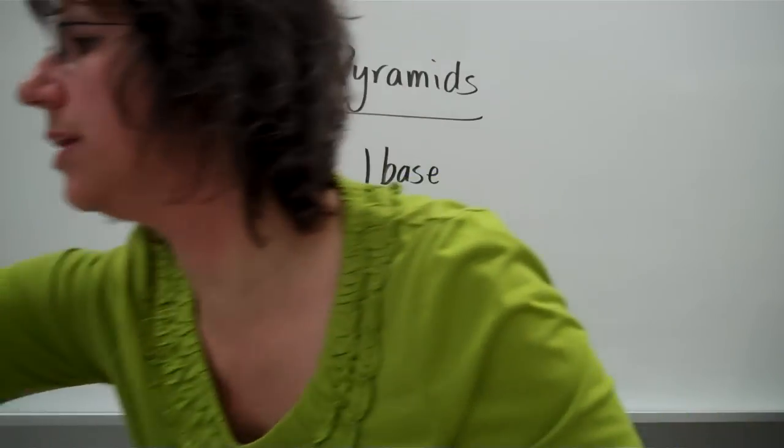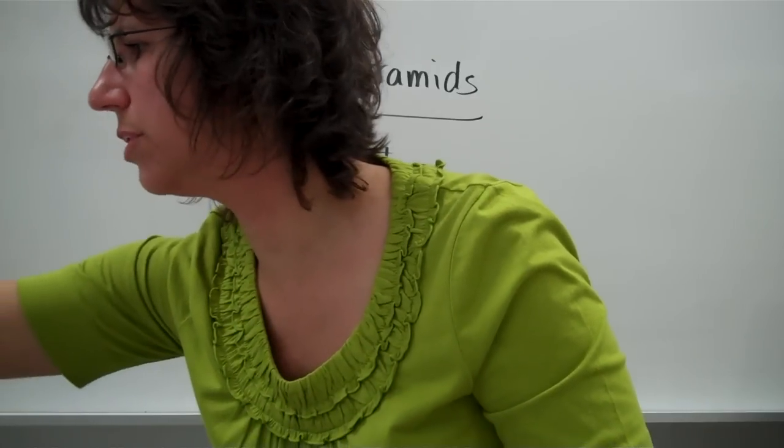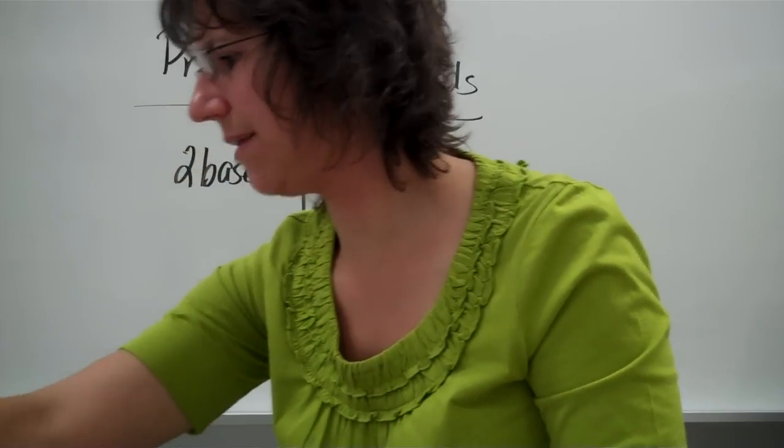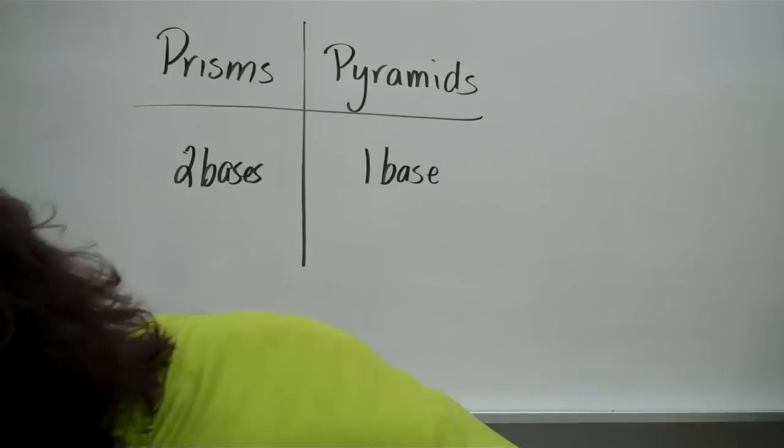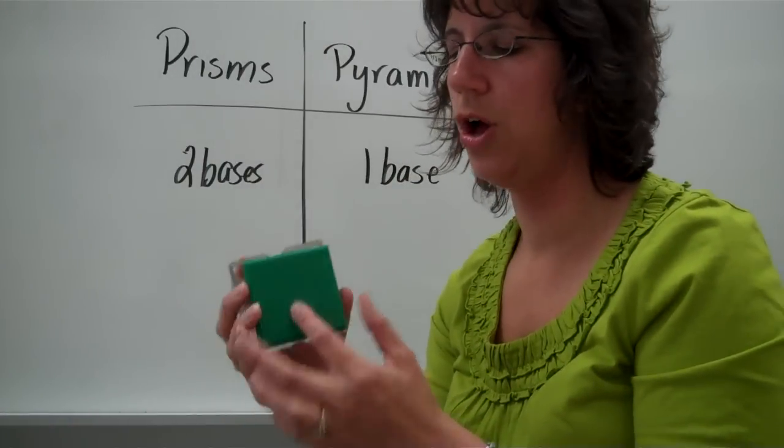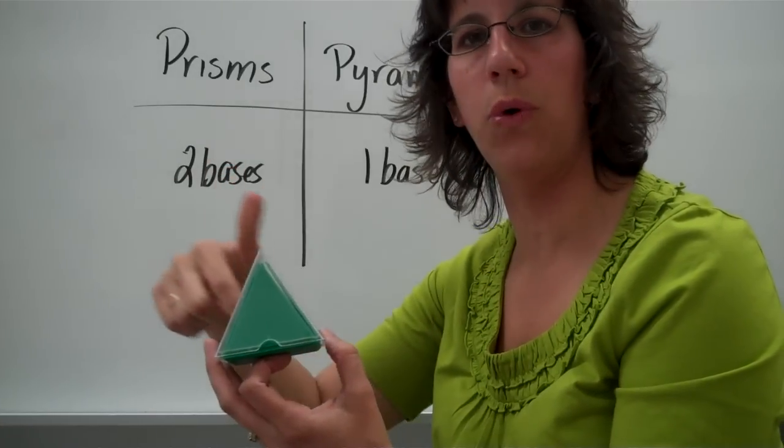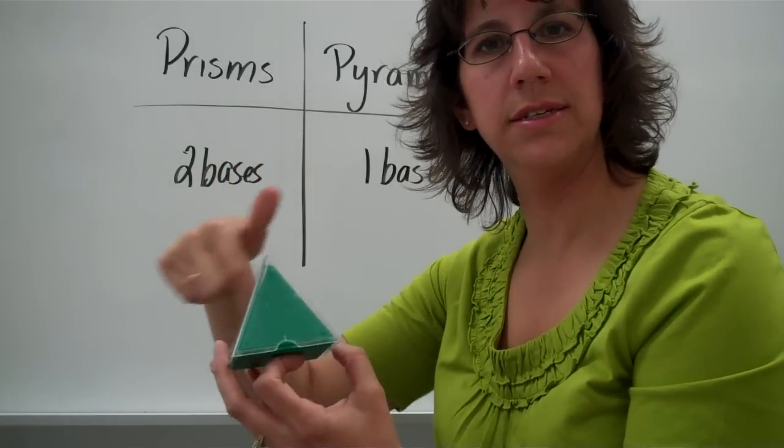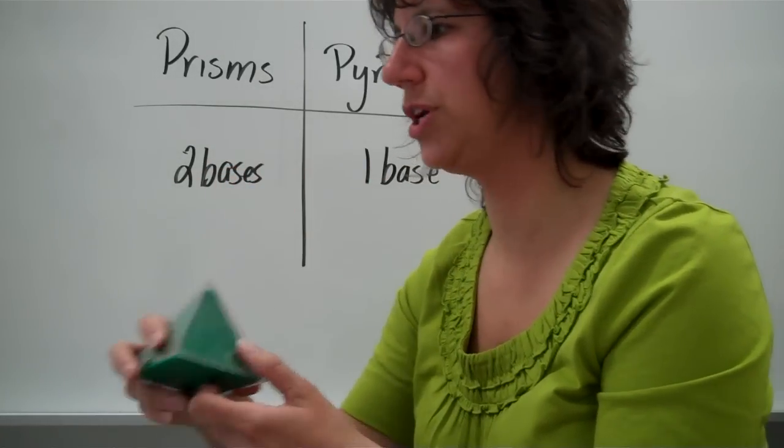You could also have a rectangular pyramid. I don't think I have one. You could have a rectangular pyramid, and a rectangular pyramid would simply have a rectangle on the bottom. Again, it would give you four triangle faces around the edge because the bottom has four shapes.